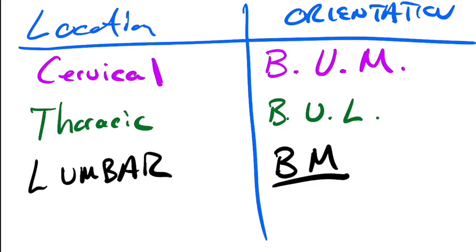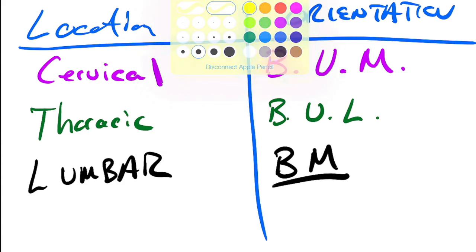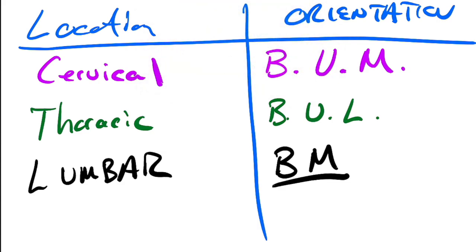That's really all you need to know. You can consider cervical and lumbar as the same: the cervical region is backwards, upwards, medial; thoracic is lateral; lumbar is medial.